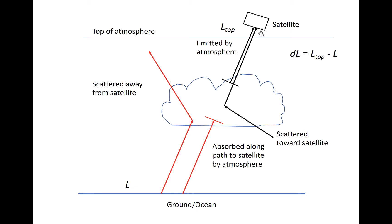Suppose the radiance at the surface is L, and the radiance at the top of the atmosphere is L sub top. The difference, DL, is a sum of four terms: increases due to emission and scattering into the path to the satellite, and decreases due to absorption and scattering away from the path toward the satellite.